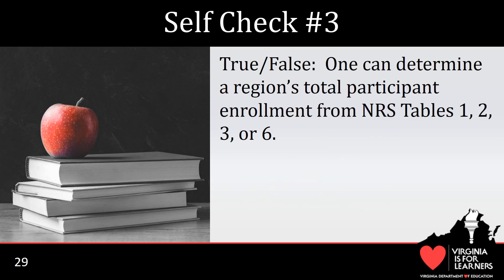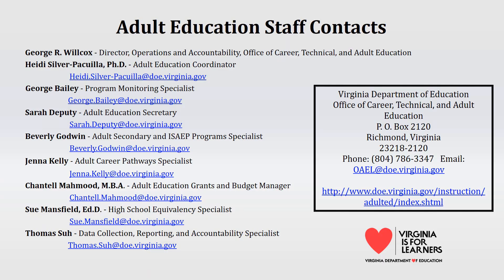True or false? One can determine a region's total participant enrollment from NRS Tables 1, 2, 3, or 6. The answer is true. The Resource Center has provided access to its Blackboard site for folks to ask questions and discuss their responses to the discussion questions provided in this tutorial. Thank you for taking the time to participate in this tutorial.